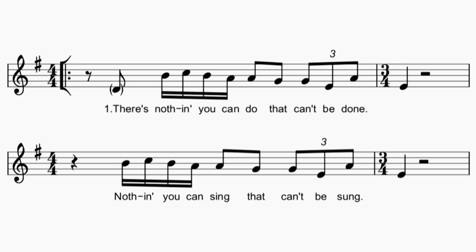'All You Need Is Love' by The Beatles uses the same technique as well, but it uses it so much more thoroughly than the other two examples. In my first two examples, this 3/4 trick was used quite sparingly — only in certain moments of the song. But in 'All You Need Is Love,' it's used as the foundation of the verse section, with the verse constantly jumping back and forth from 4/4 to 3/4.